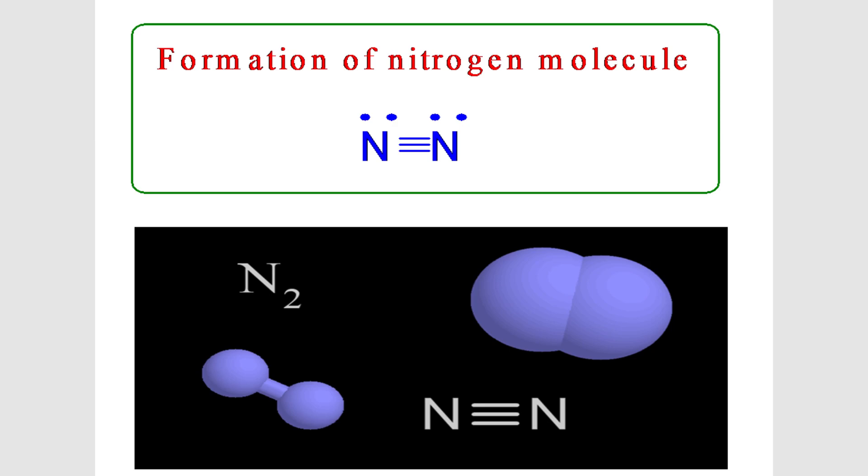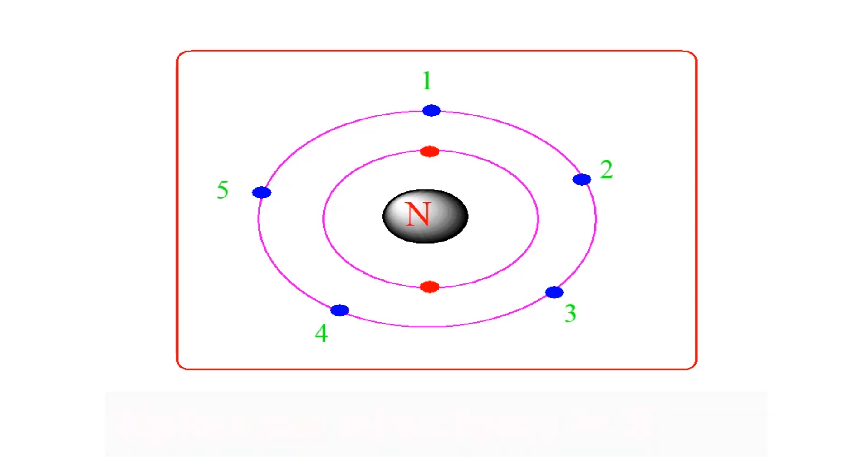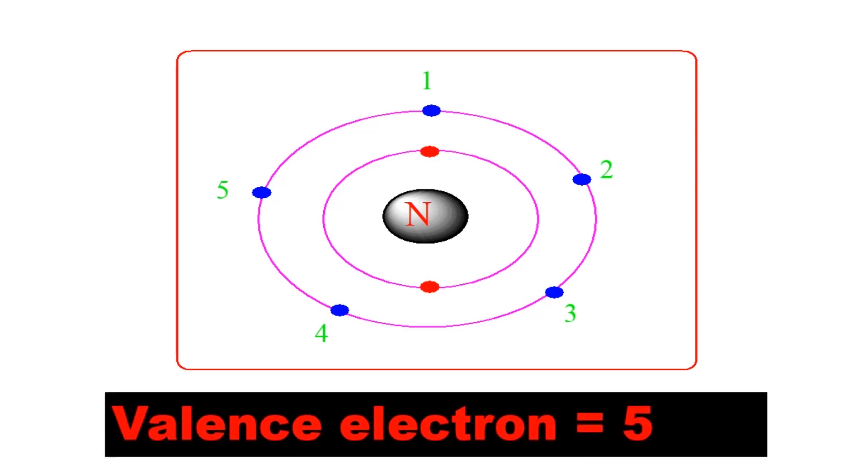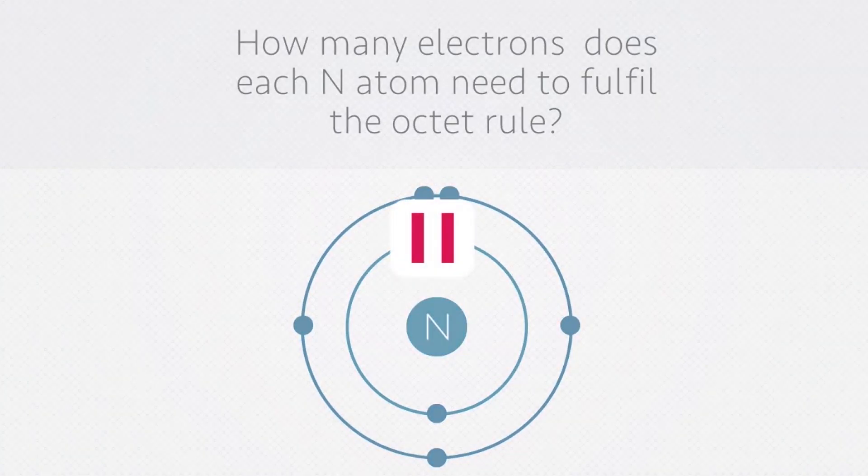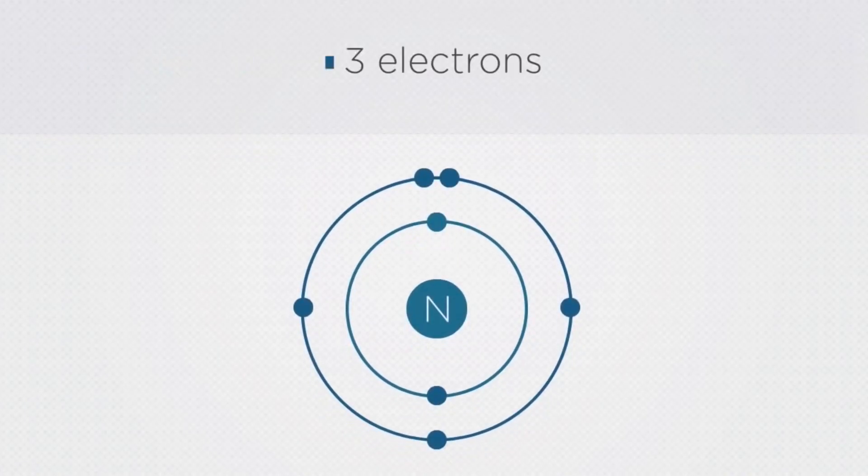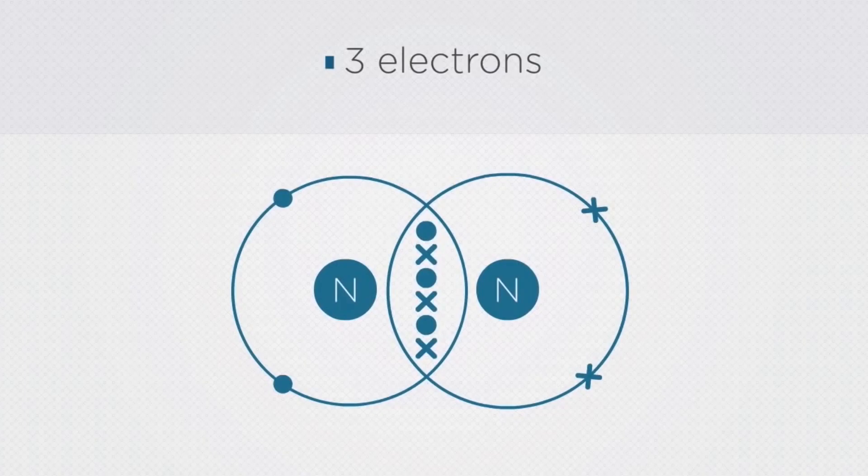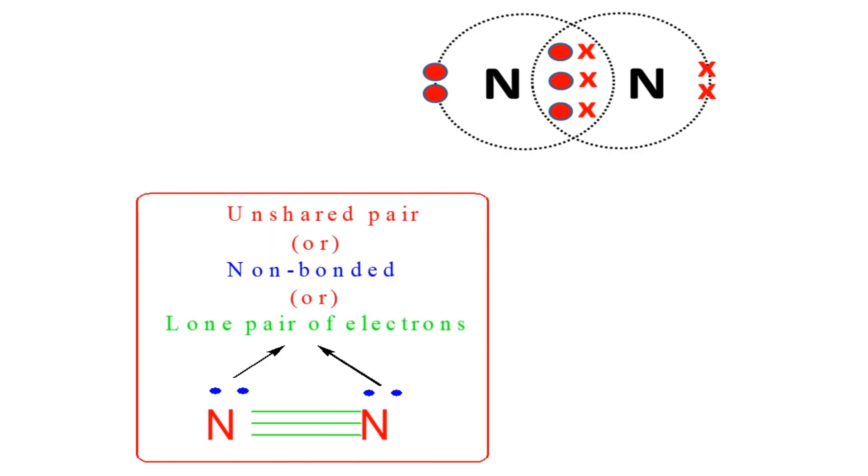Another example is the formation of nitrogen molecule. The nitrogen atom has five electrons in its valence shell. It needs another three electrons to complete its octet. A nitrogen atom can fill its octet by sharing three electrons with another nitrogen atom forming three covalent bonds, a so-called triple bond. The remaining two electrons on nitrogen atom are called unshared pair or non-bonded or lone pair of electrons.